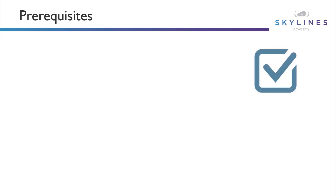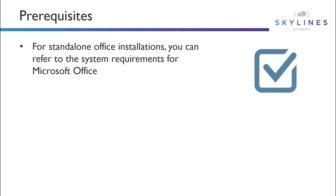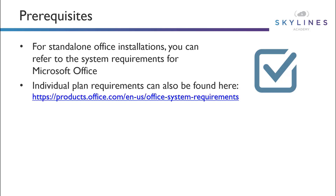Office 365 or M365 is not without its own standard set of prerequisites. For standalone Office installations, you can follow standard installation software guidance for that product. That detail is in the link provided for individual plans. Most of the software, without the use of a thick client like Office Pro Plus, Office 2019, or even Office 2016, you can run Office-based applications like Word, Excel, and PowerPoint through a web browser.